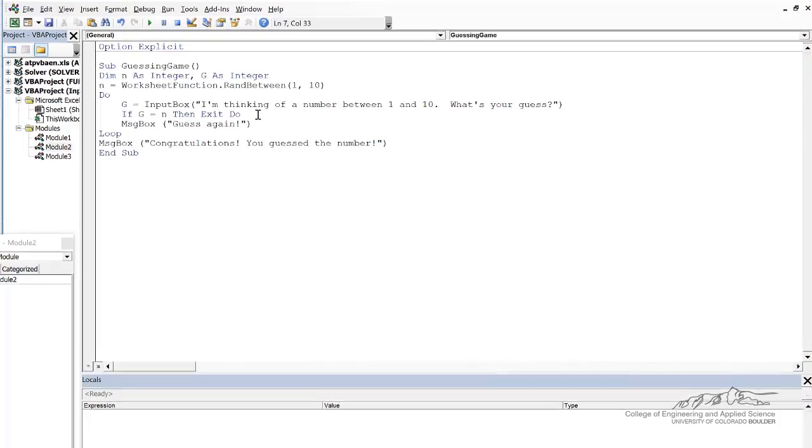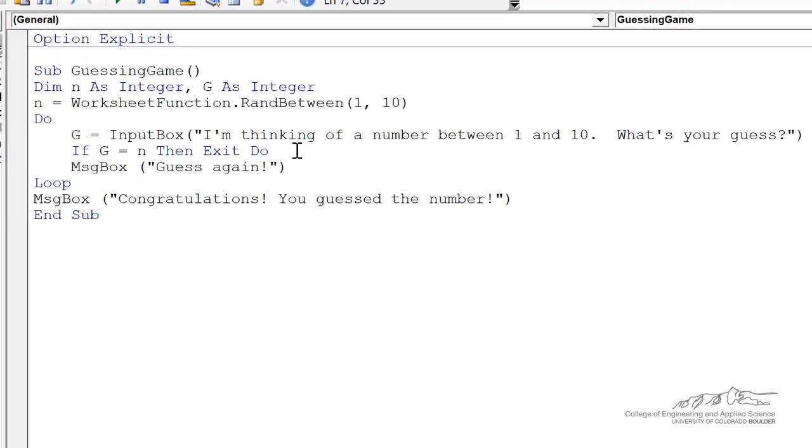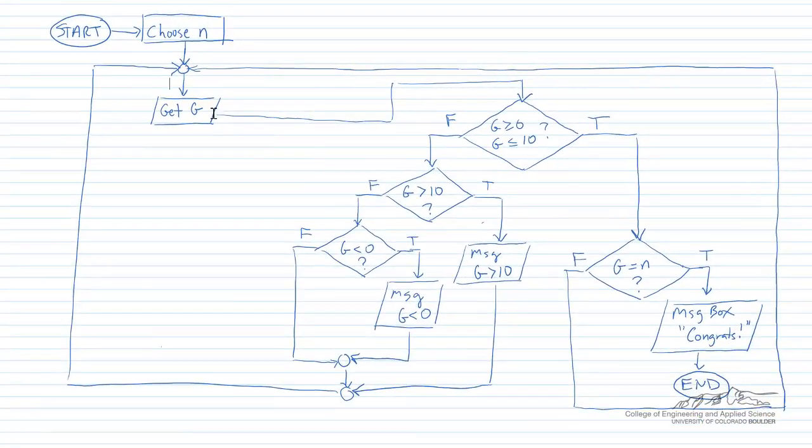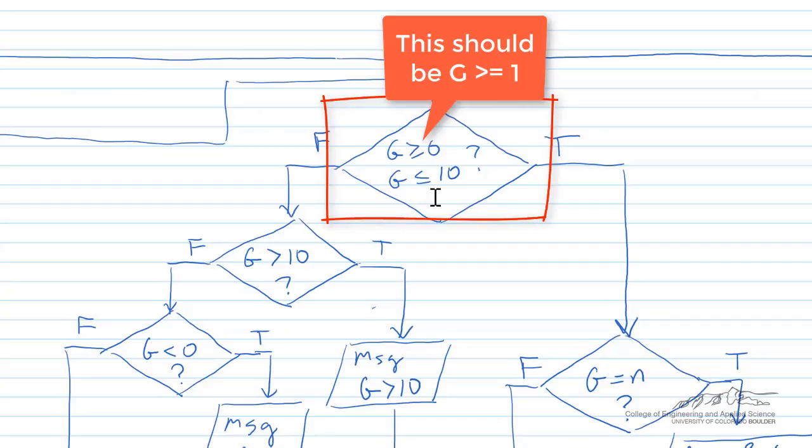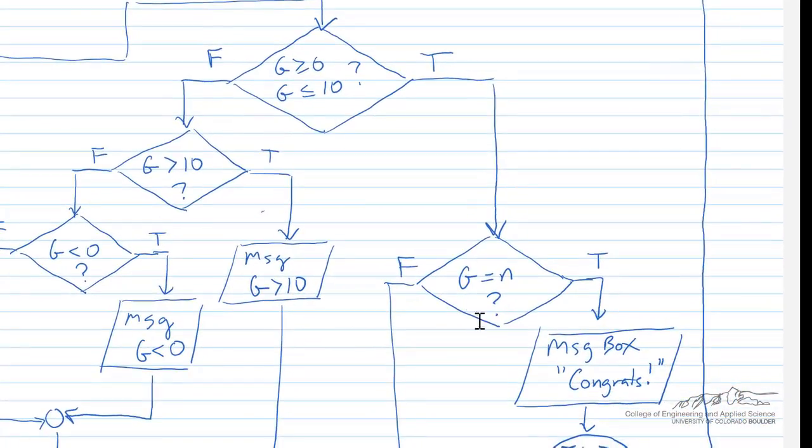The first improvement we're going to make is how to make sure that G is between 1 and 10 inclusive. So shown here, after we get G, we want to make sure both of the conditions, G greater than or equal to 0 and G less than or equal to 10, have to be true. And if that's the case, then we move on and we do the guessing game.